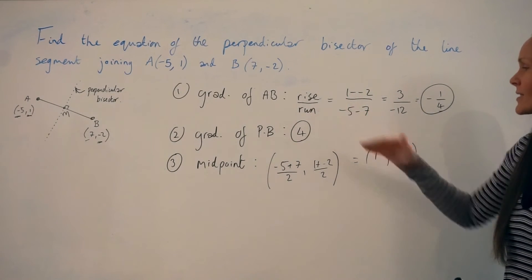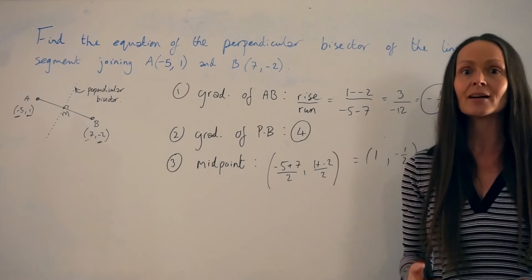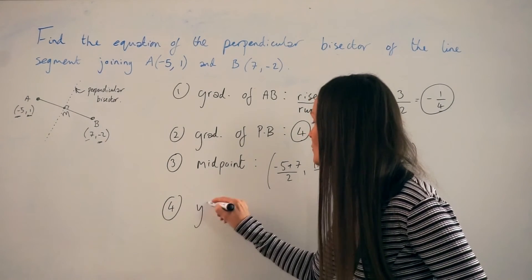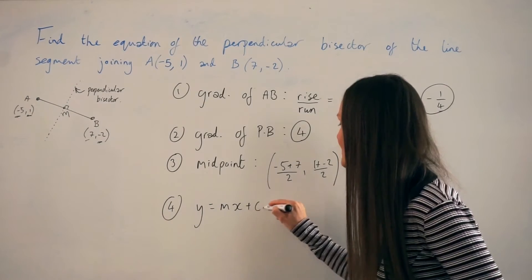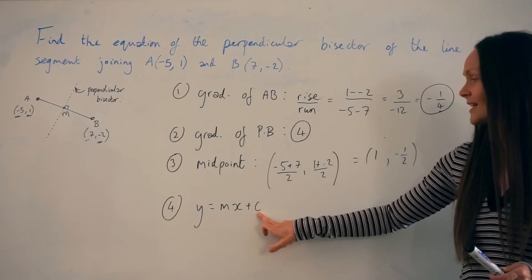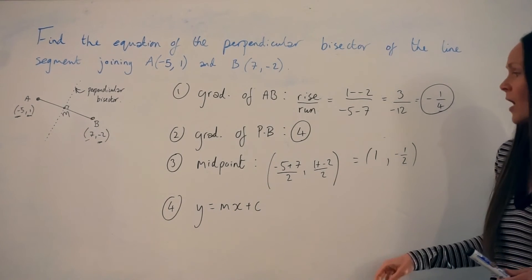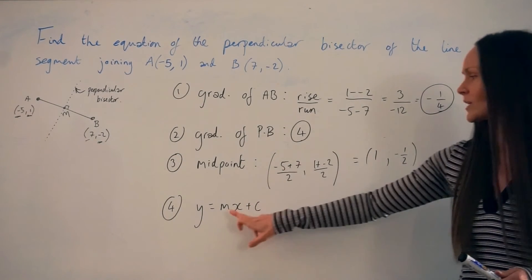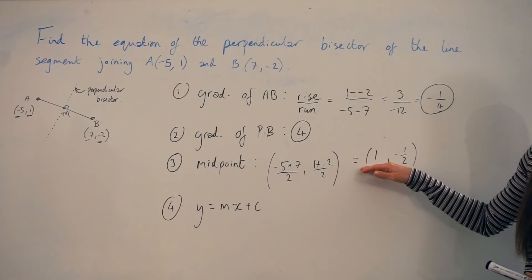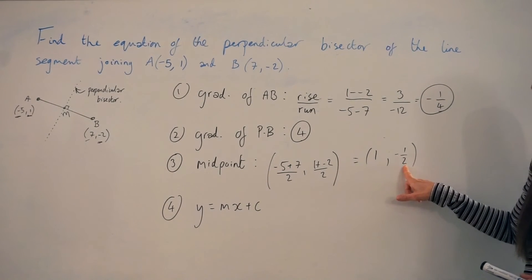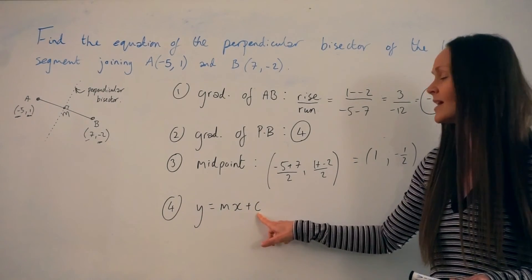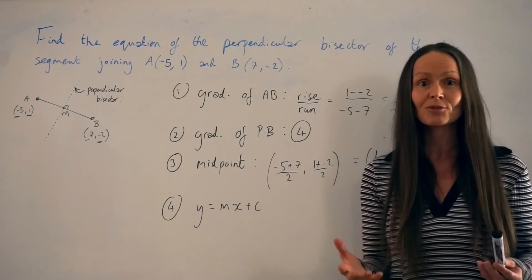Next, we have to use the gradient and the coordinates of the midpoint to write down the equation of the perpendicular bisector. It's a straight line, so I'm going to write it in the form y = mx + c. When it's rearranged like this so that y is the subject, m is always the gradient and c is what we call the y-intercept. We know the gradient is 4, so I can change m to 4. We also have a set of coordinates along the perpendicular bisector — point N — so I can substitute the x and y values from there into the equation. All that's left to work out is c, the y-intercept, and then we can write down the final equation.